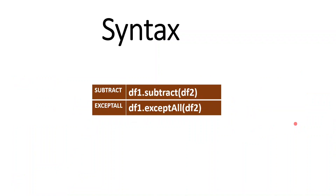Coming to syntax, it's very simple. For subtract, use df1.subtract(df2). The syntax for exceptAll is the same — instead of subtract, use exceptAll, with 'A' in uppercase: df1.exceptAll(df2). I hope you understood what subtract is, what exceptAll is, and the difference between these two. Now let me give a demo in a Databricks notebook.